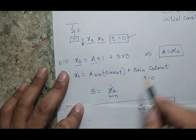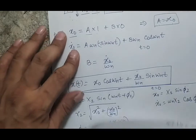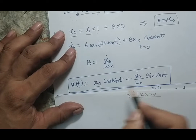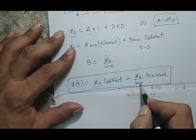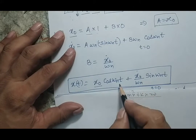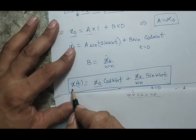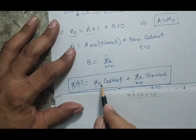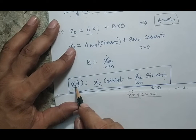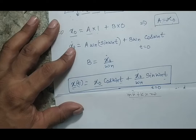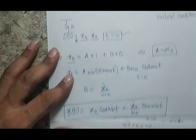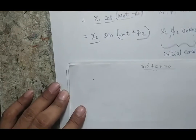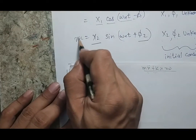Substituting A and B back into the solution gives the final expression: x(t) = x₀ cos(ωₙt) + (ẋ₀/ωₙ) sin(ωₙt). In this expression, x₀, ẋ₀, and ωₙ are all known; only t is the variable. Differentiating this expression gives velocity, and differentiating once more gives acceleration.